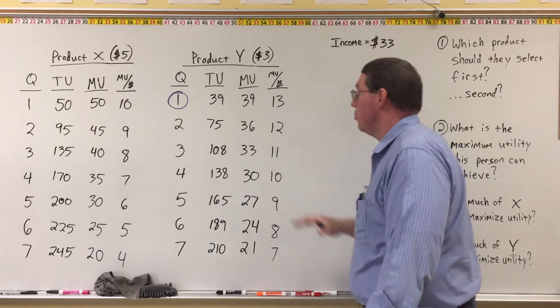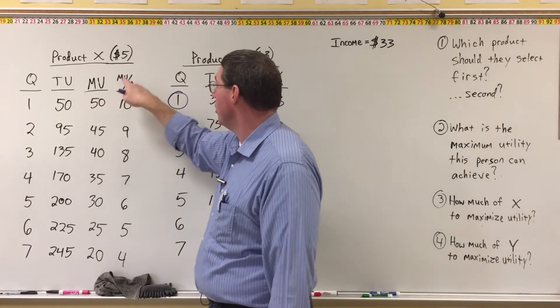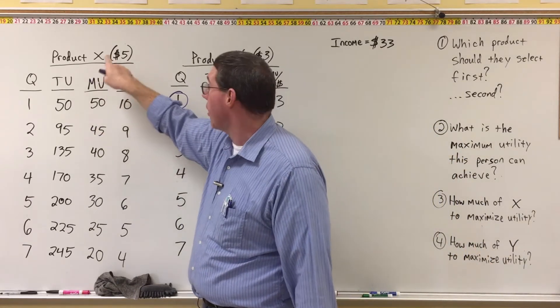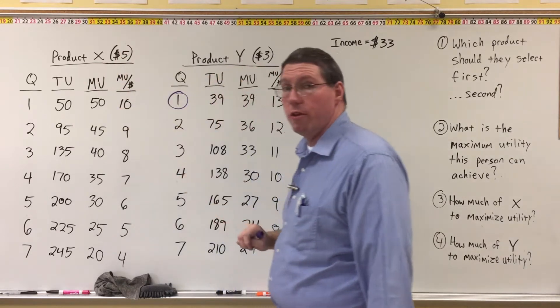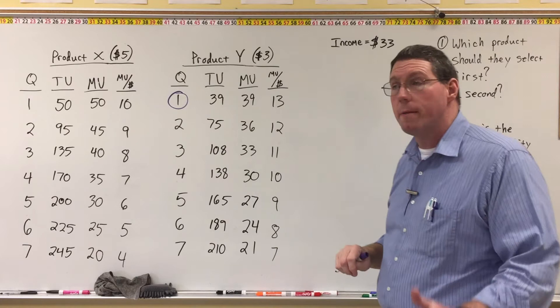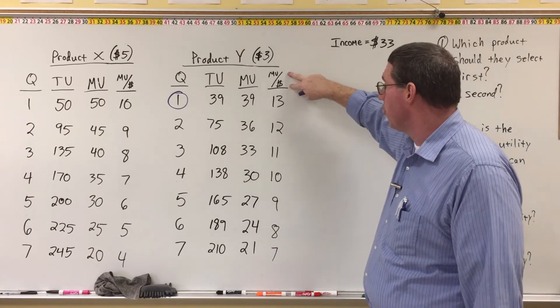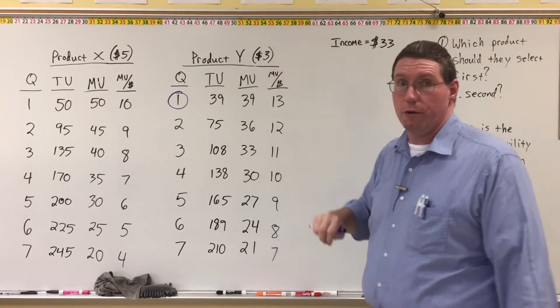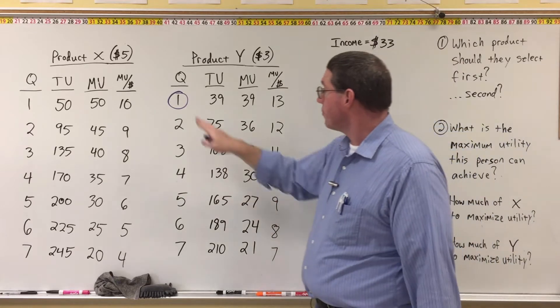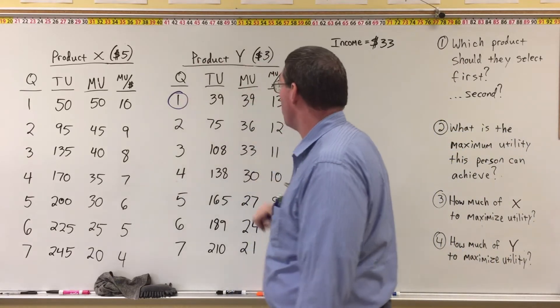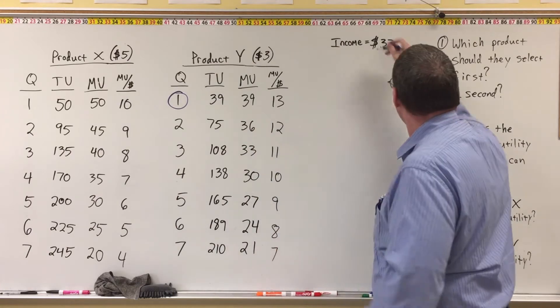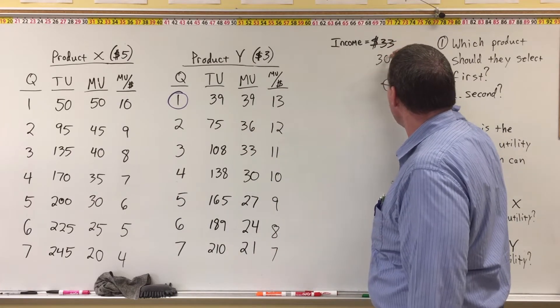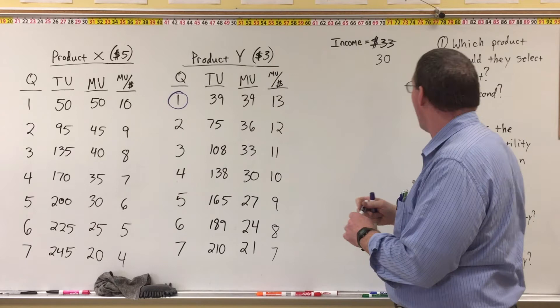But remember, we're not doing marginal utility, we're doing marginal utility per dollar. And since product X costs more money, that's why it has a lower marginal utility per dollar. And we are always choosing according to marginal utility per dollar, not based on marginal utility. Okay, so we're going to take the first unit of product Y now, and we're going to knock off $3, because it costs us $3 for one unit of product Y, so we now have $30 remaining.